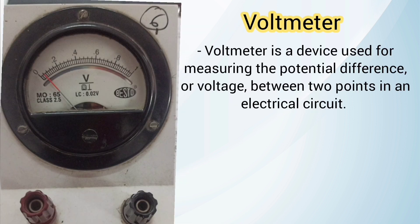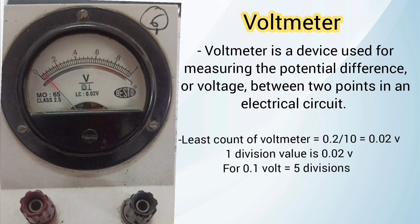A voltmeter is a device used to measure the potential difference or voltage between two points of an electric circuit. It also has two terminals: positive and negative. For the least count of the voltmeter, total divisions from 0 to 0.2 are 10, so 0.2 divided by 10 equals 0.02 volt. One division value is 0.02 volt, so for 0.1 volt we require five divisions.